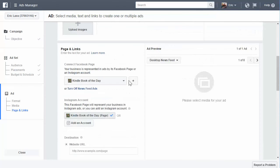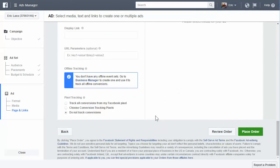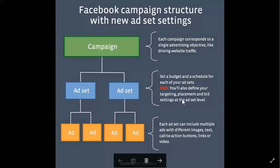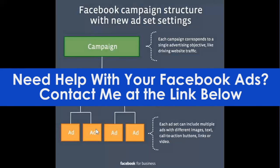So that is how it is set up, and once you go through the ad portion you can place your order. To recap the structure: your campaign is the objective, your ad set is where you set your budget, schedule, placement, and targeting, and then the actual ad is creating the ad itself — the text, the image, the headlines, and the URLs you want to put in there. If you have any questions, you can contact me — there's a link somewhere below or above this video depending on where you're watching it. We'll see you in the next one.